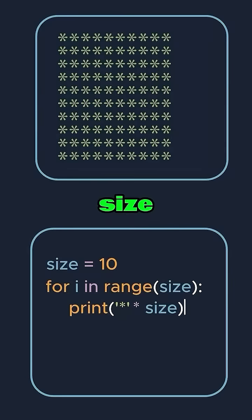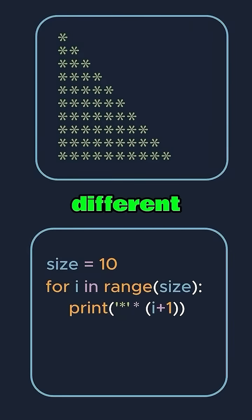By simply changing the size variable to i, we get a completely different result. Since i changes with each row, the number of stars varies accordingly.